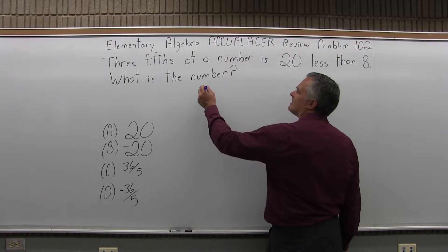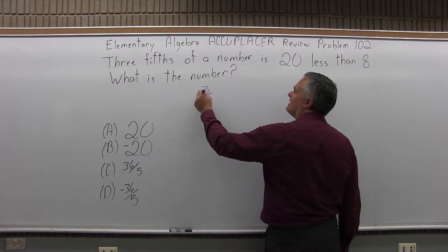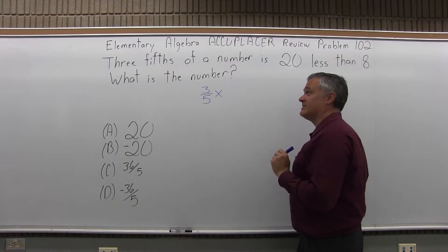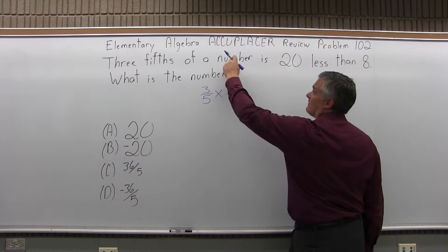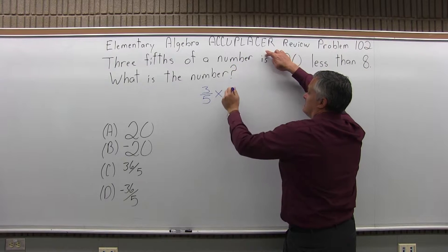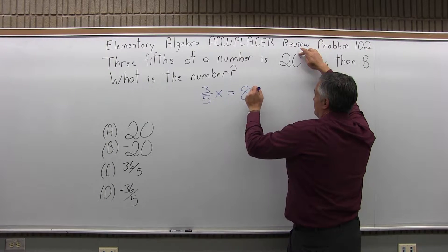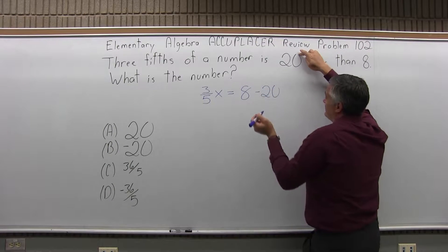So, three-fifths of a number would be three-fifths times x, so that's three-fifths of a number, equals 20 less than 8, so 8 minus 20 is 20 less than 8.